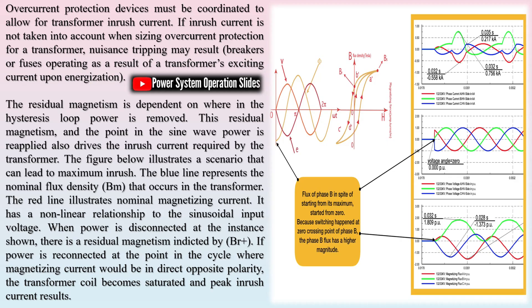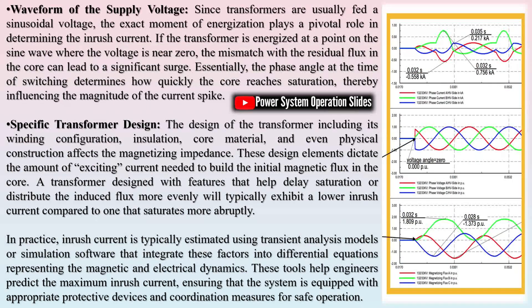When the core is driven into magnetic saturation, its effective permeability drops, causing a dramatic increase in the current drawn. Therefore, understanding the hysteresis or saturation characteristics of the core is critical, as these details determine how far the core can be pushed before the magnetization and thus the current spikes.